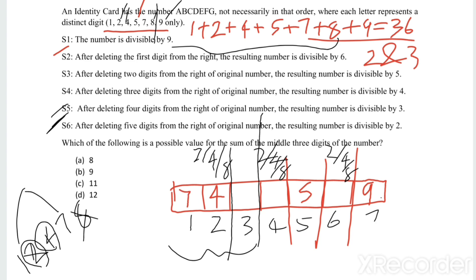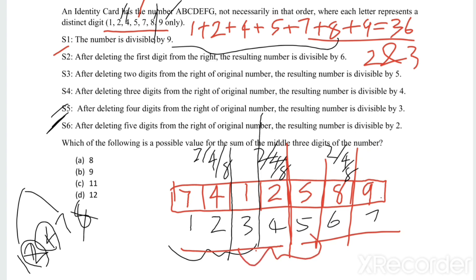With the 3rd position as 1, checking divisibility by 4 for the 4th position: the two-digit number formed by positions 3 and 4 must be divisible by 4. 12 is divisible by 4, so position 4 is 2. 18 is not divisible by 4 and 4 is already used. Therefore position 4 is 2, and position 6 is 8. The sum of the middle three digits (positions 3, 4, 5) equals 1 + 2 + 5 = 8.